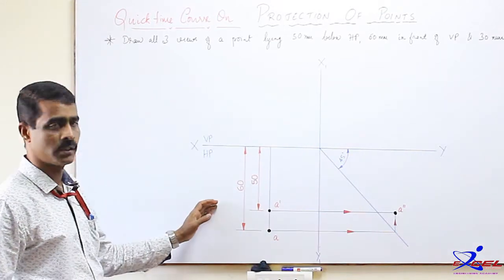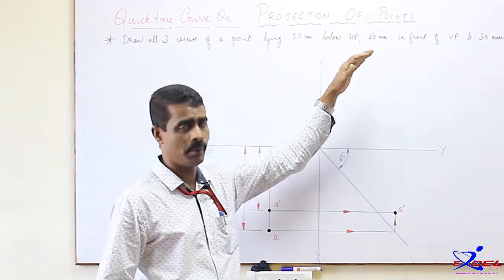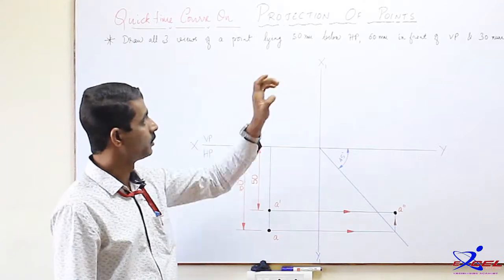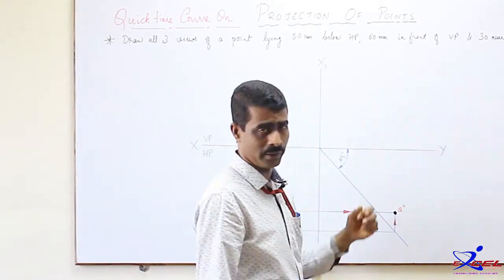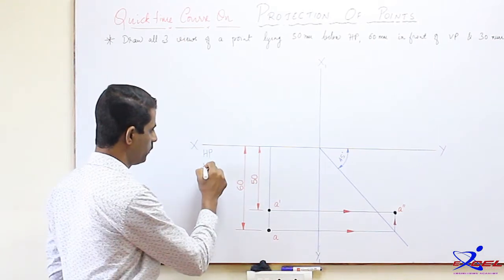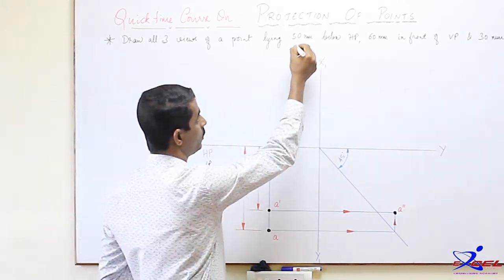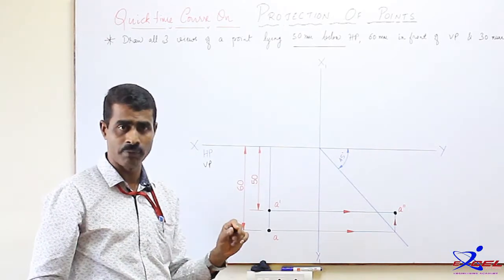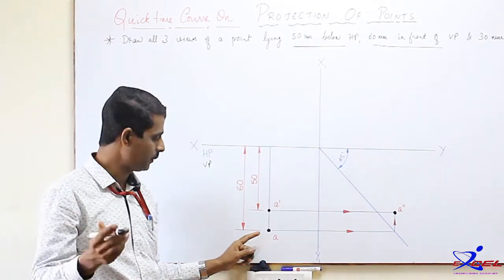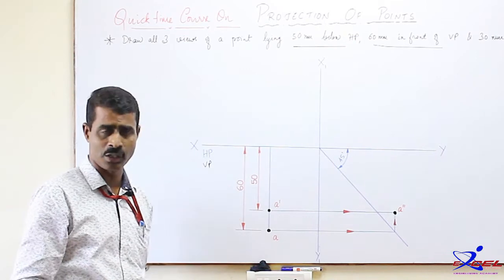Let us take an example of a point lying in the fourth quadrant. Draw all three views of a point lying 50 mm below HP and 60 mm in front of VP. Below HP and in front of VP is the fourth quadrant. In the fourth quadrant, both front and top views will be below the XY line. The HP distance of 50 mm matters for the front view, and the VP distance of 60 mm matters for the top view.